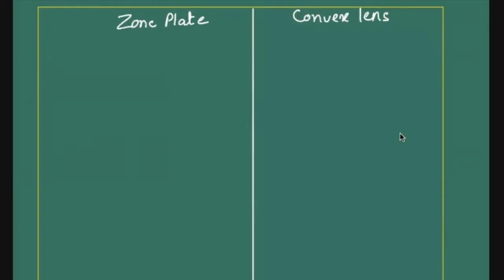So here I have zone plate and here I have convex lens. If we talk about the origin of fringes, the source is, for first one, the source is diffraction, whereas in convex lens, source is refraction.